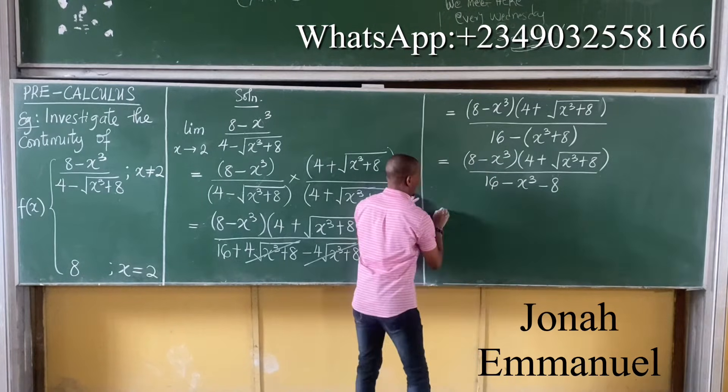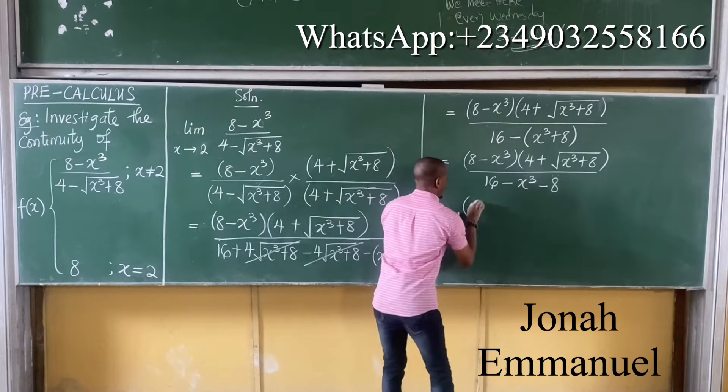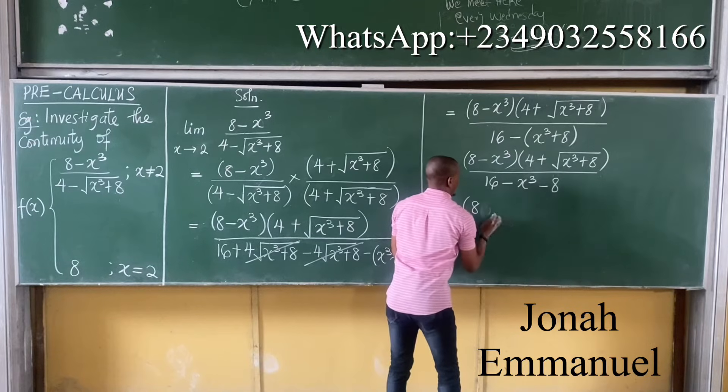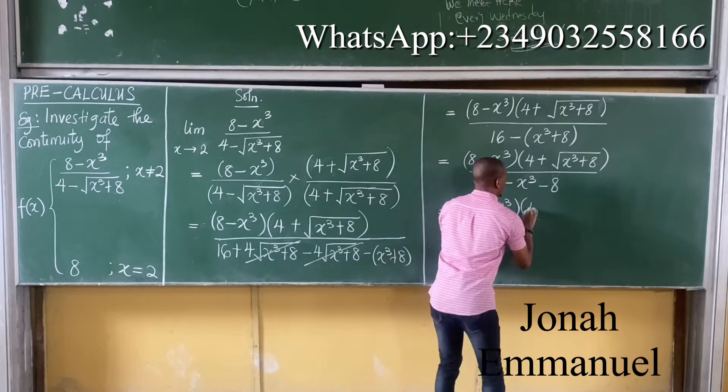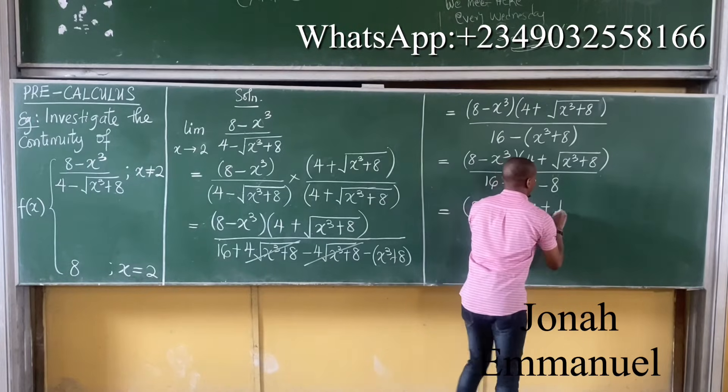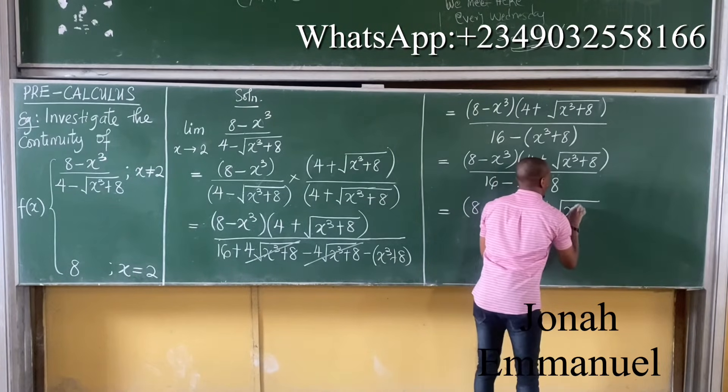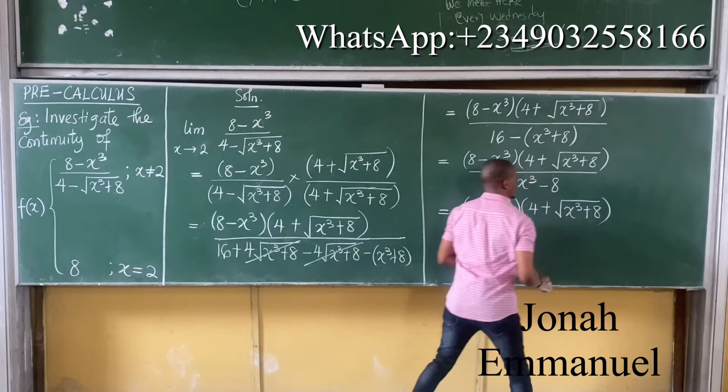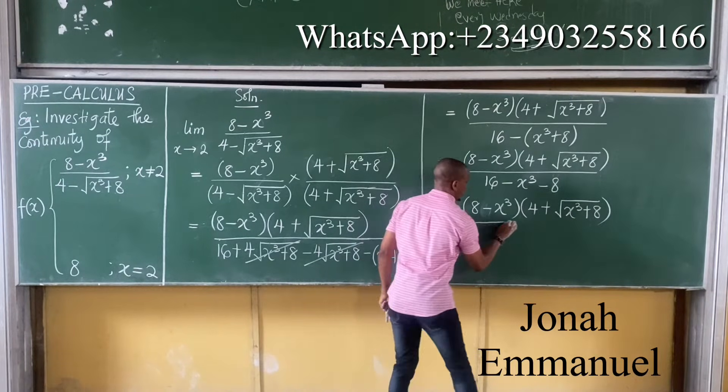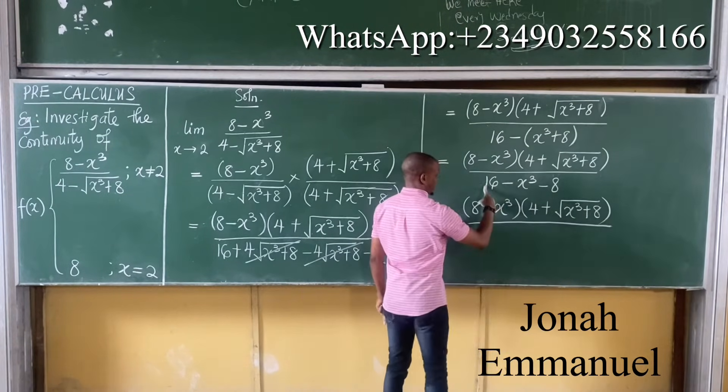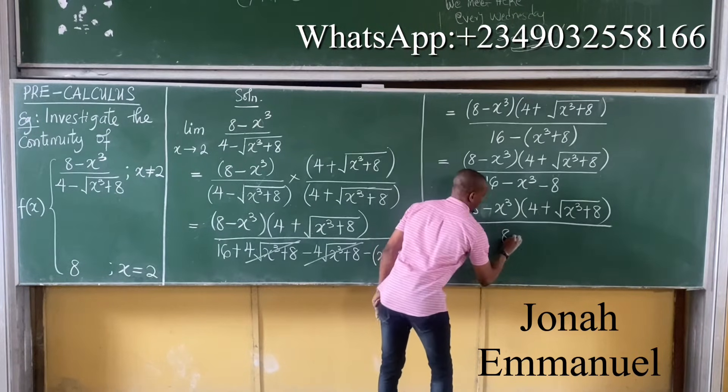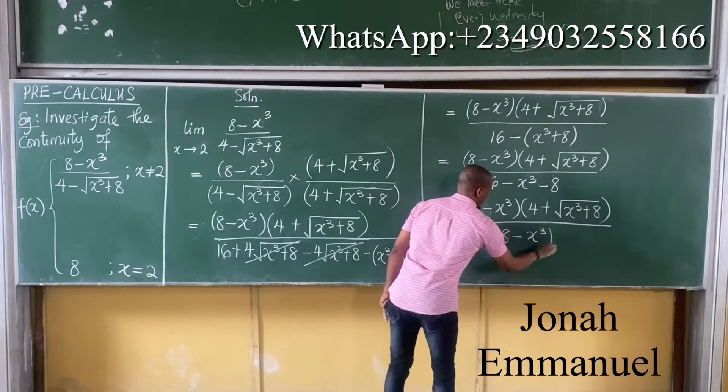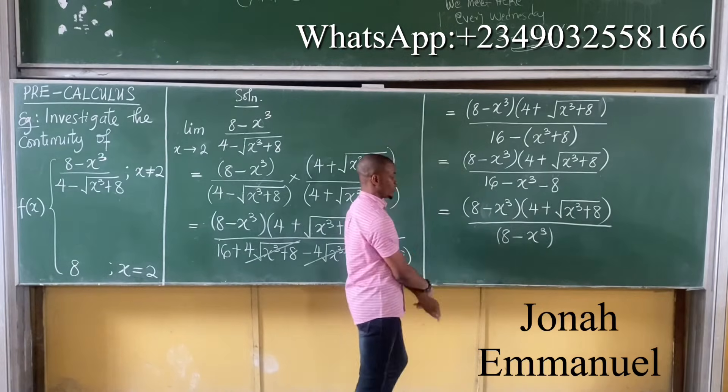So hence, this is now equal to in bracket 8 minus x cubed into 4 plus the square root of x cubed plus 8, all over 16 minus 8 is 8, minus x cubed. So I have this as the denominator.